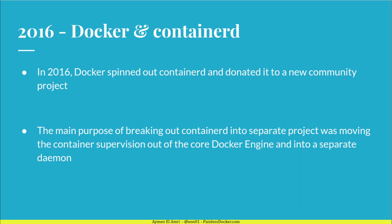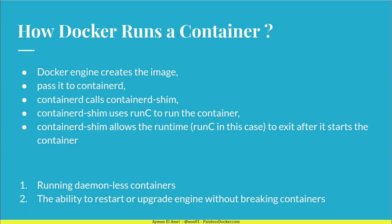Breaking out this component into a separate project allows Docker to move the container supervision out of the core Docker engine and into a separate daemon. With this new architecture, when you run a Docker container, the Docker engine creates the image, passes it to containerd, which calls containerd-shim. Containerd-shim uses runc to run the container, then allows it to exit after it starts. The main two benefits of this model are running daemonless containers and the ability to restart or upgrade the engine without breaking running containers.